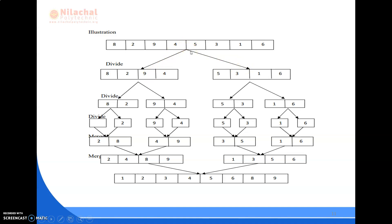The mid value is found as upper bound plus lower bound divided by 2, giving a value of 4. The same thing is again divided into these 4 elements, and then into 2 arrays of 2 elements each. These 2-element arrays are further divided into single elements. Once we have single elements — here 8, 2, 9, 4, 5, 3, 1, and 6 — we begin merging them by sorting.